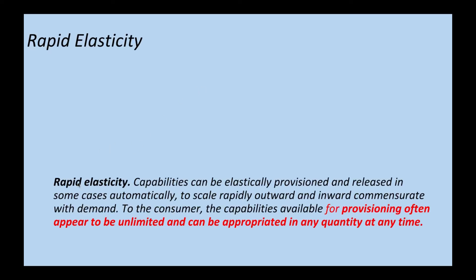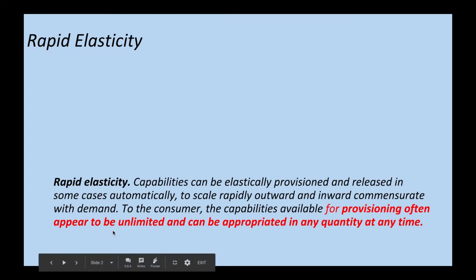Going by the NIST definition, rapid elasticity means capabilities or services can be elastically provisioned and released, and in some cases automatically — without manual intervention. We can apply logic to provision services automatically. Resources scale rapidly outward and inward depending on customer demand, and the capacity available for provisioning often appears to be unlimited and can be appropriated in any quantity at any point of time.